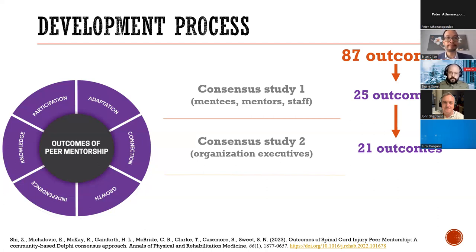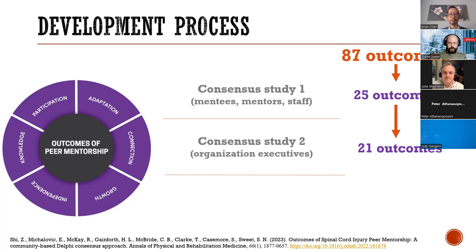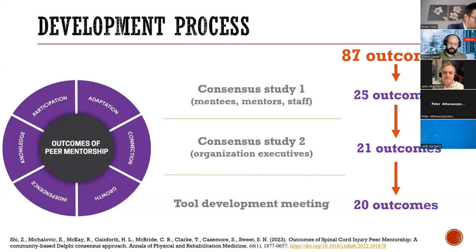From the first consensus study we reduced outcomes from 87 to 25. We then worked with SCI Canada and their organizational executive across Canada to also rate those 25, using the same assessment scale. We showed those 25 are highly relevant and highly sought out by community organizations, with 21 to 25 remaining after that round. This provided a more manageable set of outcomes to work with in developing a tool to better evaluate SCI peer support.